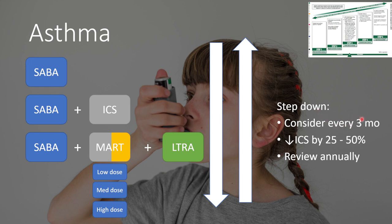Stepping down is considered every three months, reducing the inhaled corticosteroid component by 25 to 50% of the dosage. There is also an annual review of asthma, usually conducted in primary care, to monitor patient progress. If symptoms worsen, we escalate down the pathway. If all options are exhausted, the patient gets a specialist referral.